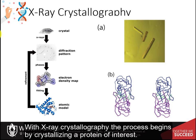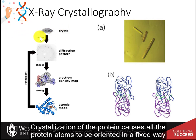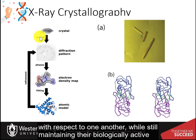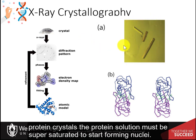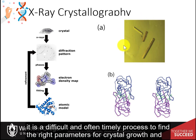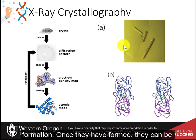With x-ray crystallography, the process begins by crystallizing a protein of interest. Crystallization of the protein causes all the protein atoms to be oriented in a fixed way with respect to one another, while still maintaining their biologically active conformations. This fixed crystal structure is a requirement for x-ray diffraction. To form protein crystals, the protein solution must be supersaturated to start forming nuclei. It is a difficult and often timely process to find the right parameters for crystal growth and formation.